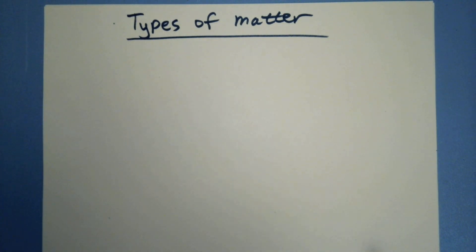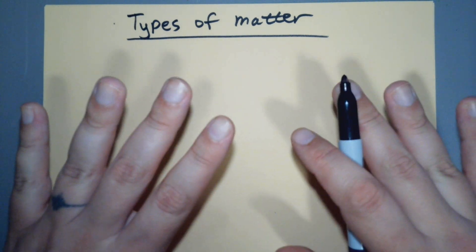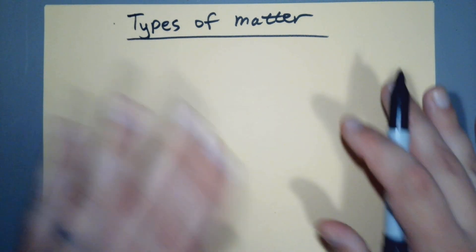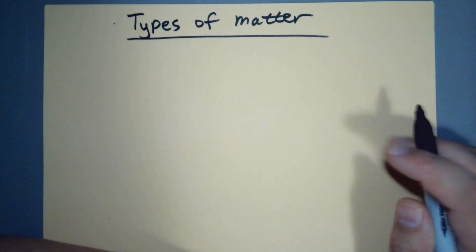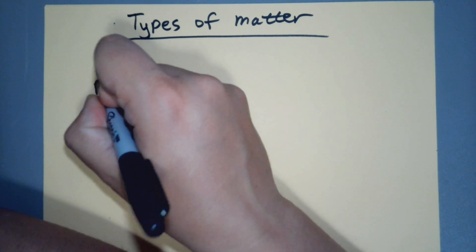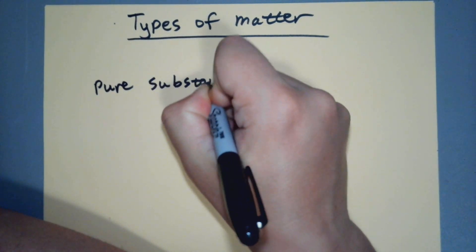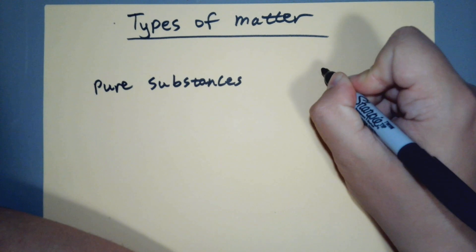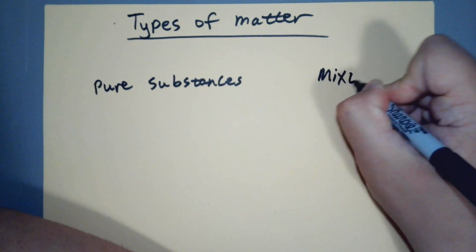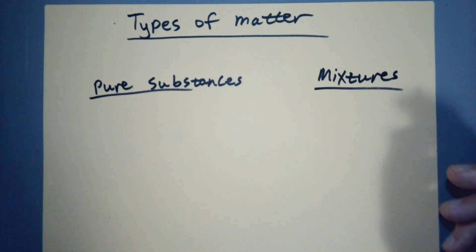Alright, so now we're going to talk about different types of matter. The law of conservation says matter can't be created or destroyed, but there's different types of atoms and different types of matter. There's a couple different things we can do with it. The first fork in the road here: there are pure substances and then there are mixtures.